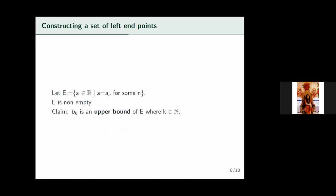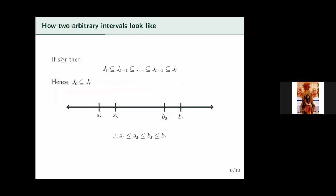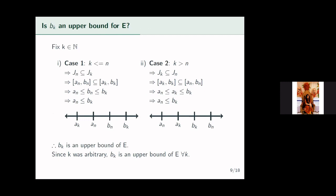Now let us begin the proof. We construct the set E of all left endpoints a_n. E is non-empty because a_1 belongs to E. We claim that b_k is an upper bound of E for any fixed natural number k. To show this, we consider two cases based on the relationship between k and n. Case one: k ≤ n. Then J_n is contained in J_k, so on the number line a_n ≤ b_n ≤ b_k, giving us a_n ≤ b_k. Case two: k > n. Then J_k is contained in J_n, so a_n ≤ a_k ≤ b_k, again giving us a_n ≤ b_k.